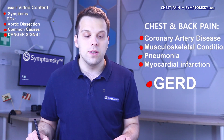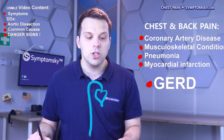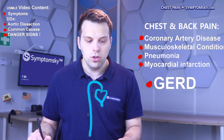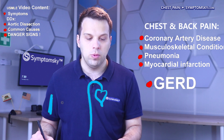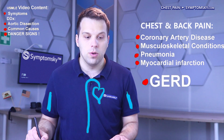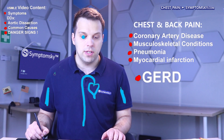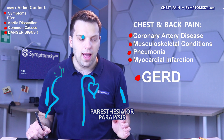In conditions such as myocardial infarction and aortic dissection, a doctor could also notice unequal blood pressure in the arms, as well as neurological symptoms such as paresthesia or paralysis. The most important thing about chest pain and back pain is to be properly informed.